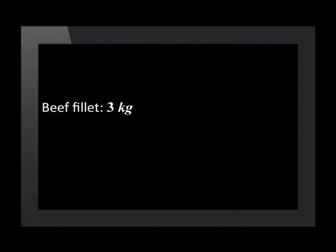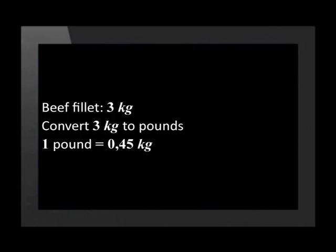One of the guests at the birthday party lives in England. He has found a South African recipe for making Biltong. You have to help him convert the metric units in the recipe to imperial units. The recipe asks for three kilograms of beef fillet. Convert three kilograms to pounds if one pound equals 0,45 kilograms. To convert three kilograms to pounds, we must divide three kilograms by 0,45 kilograms. Whether we multiply or divide by the conversion factor depends on what the conversion factor looks like. A useful technique to help you decide whether to multiply or divide is to place the information in a table.